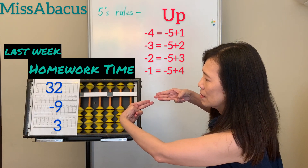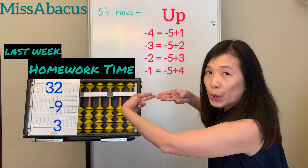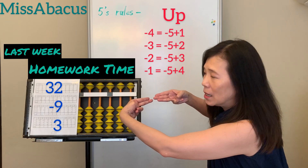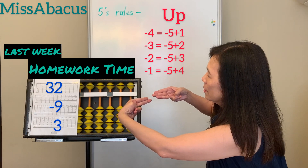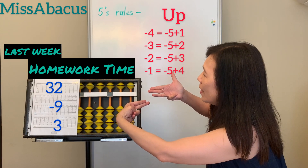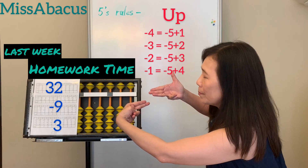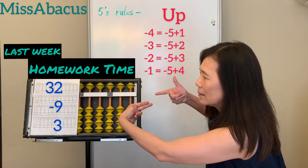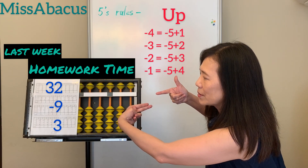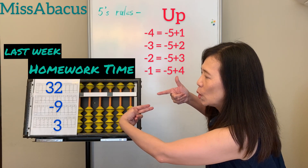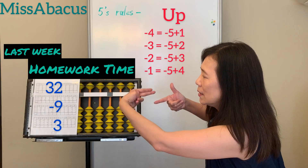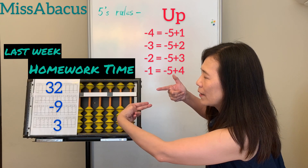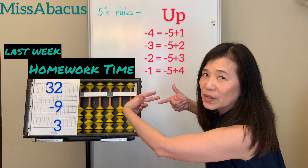Number 38: 32 minus 9 — minus 10, plus 1. Then plus 3: if you're plus 5, you need to minus 2 back. Answer: 26.